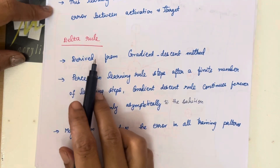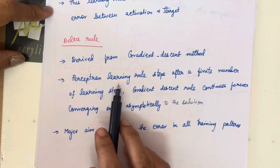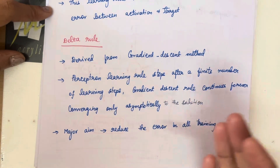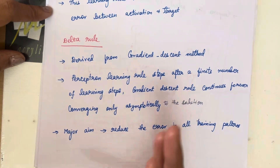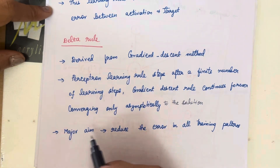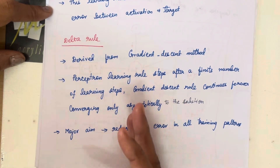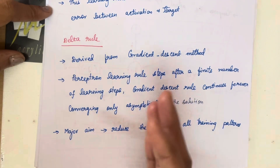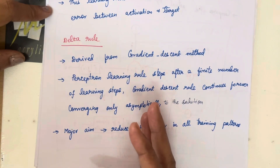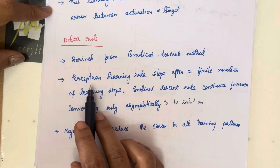The delta rule is derived from the gradient descent rule. In the previous video, I taught you about the perceptron learning rule. The perceptron followed the Hebbian rule, but it will go for a finite number of learning steps and then stop. The delta rule, or gradient descent rule, will continue forever until it converges to the solution. In the perceptron learning method we do not have that type of convergence rule, so the perceptron does not converge to the solution — that is the main problem we face in perceptron networks.